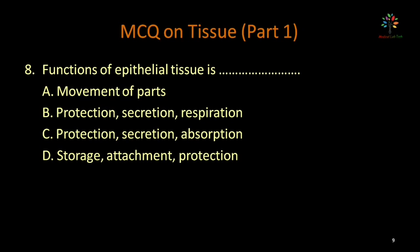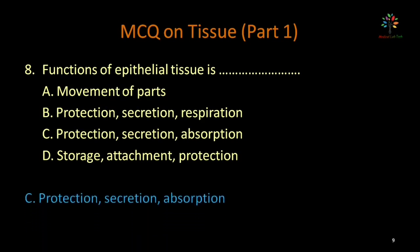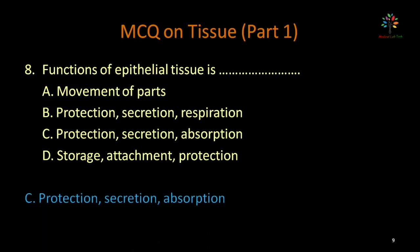Functions of epithelial tissue — options: movement of birds; protection, secretion, respiration; protection, secretion, absorption; storage, attachment. Movement of birds is not a function. Respiration is not a function of epithelial tissue, so option B is incorrect. Option C — protection, secretion, and absorption — all three are functions of epithelium. Correct option is C.